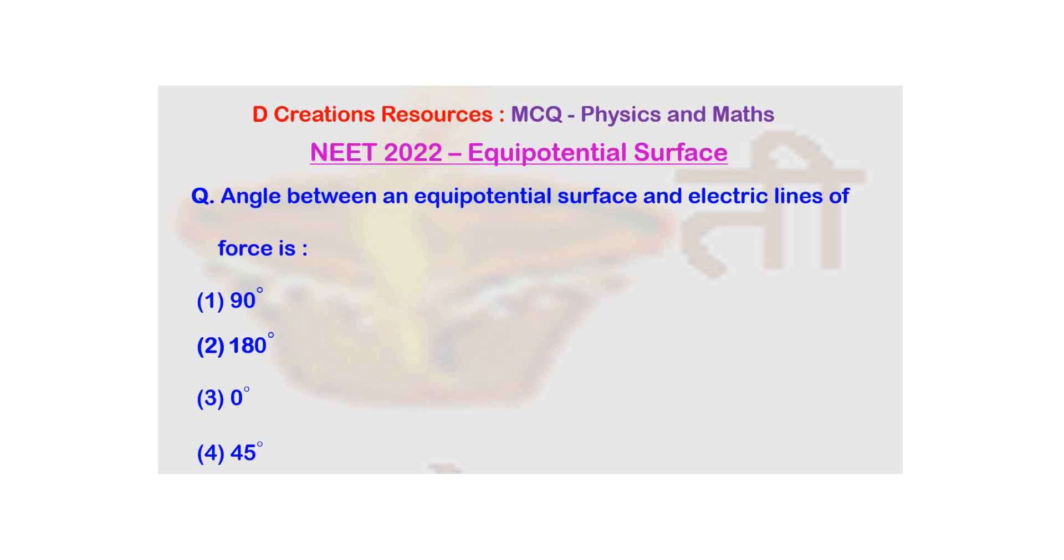The question is angle between an equipotential surface and electric lines of force is. The 4 options given are 90 degree, 180 degree, 0 degree and 45 degree.